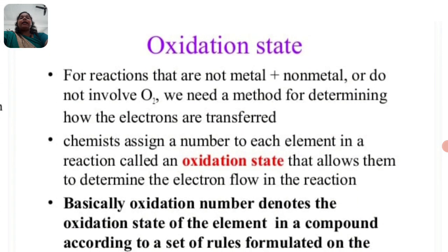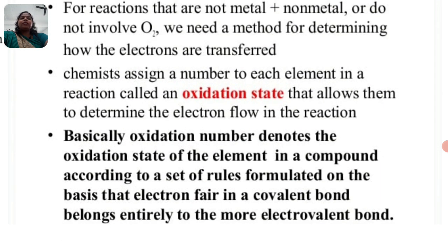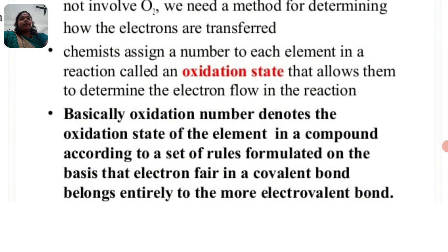For reactions that are not metal and non-metal, or do not involve O2, we need a method for determining how electrons are transferred. Here we need to understand in what way electrons transfer. We assign a number to each element in a reaction called an oxidation state, which allows us to determine the electron flow. The oxidation number is determined based on which element in the compound is most electronegative.